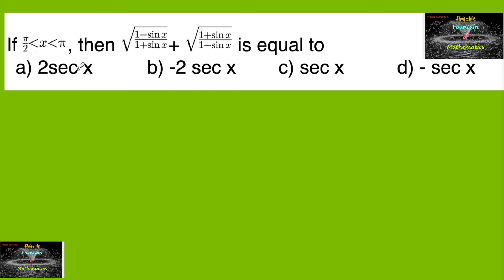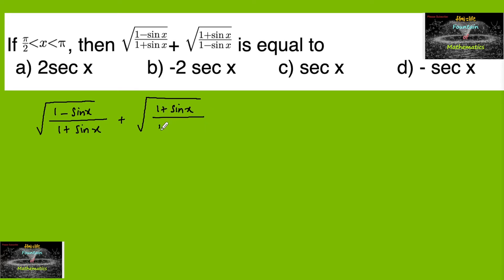If π/2 < x < π, then find the value of √((1 - sin x)/(1 + sin x)) + √((1 + sin x)/(1 - sin x)). Since x lies between π/2 and π, x belongs to the second quadrant. Let us simplify this.